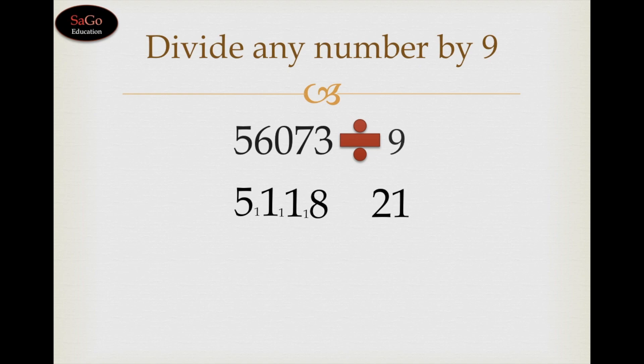Now we would adjust carry once and then we will solve. Write 8 as it is, 1 would be carried over to the next digit which is 1. 1 plus 1 is 2, write 2. 1 would be carried over to the next digit. 1 plus 1, 2, write 2. 1 would be carried over to 5, 1 plus 5, 6, write 6.